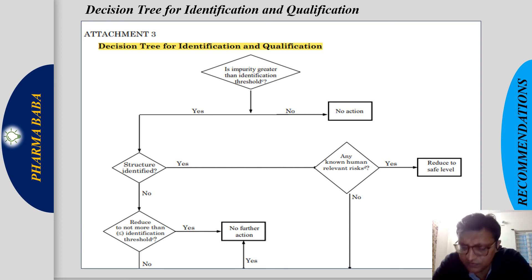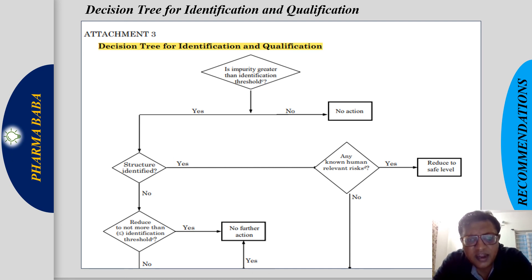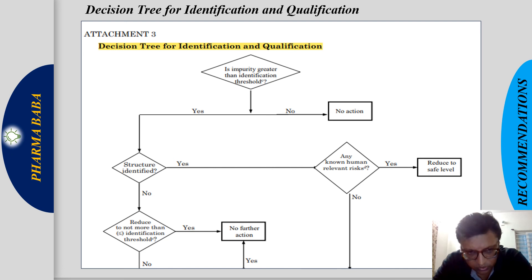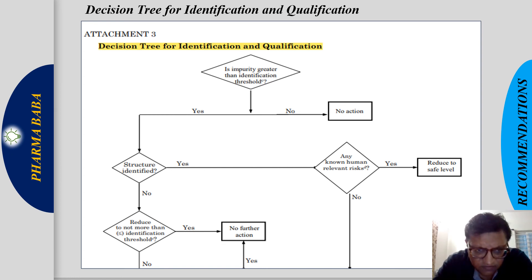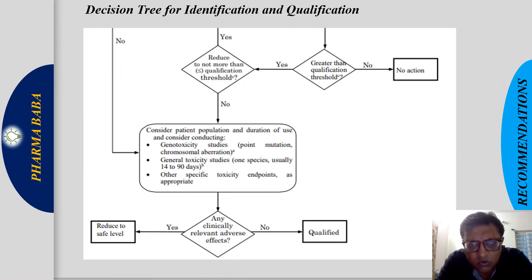In the decision tree: if the reported result is above the reporting threshold, it must be reported. Then check whether the impurity exceeds the identification threshold. If not, no action is required. If it does exceed the identification threshold, check whether the structure is identified. If identified and a known human risk exists, reduce to a safe level. If no human risk, check whether it exceeds the qualification threshold — if not, no action required; if yes, qualify it.